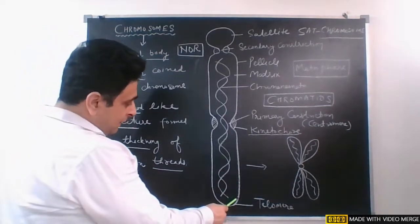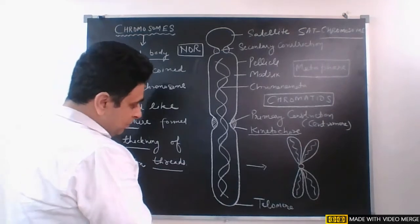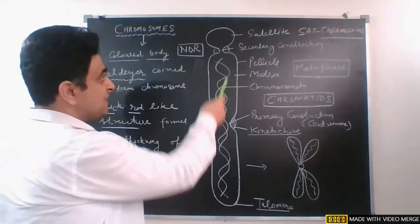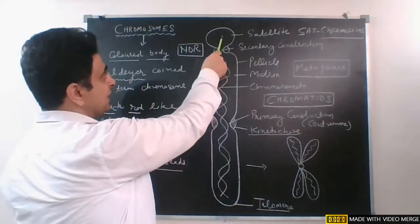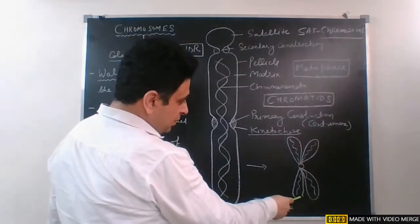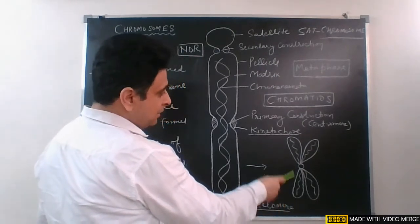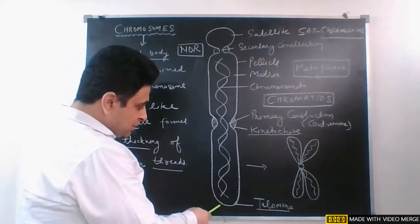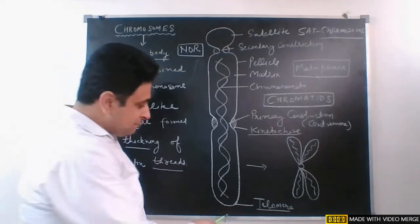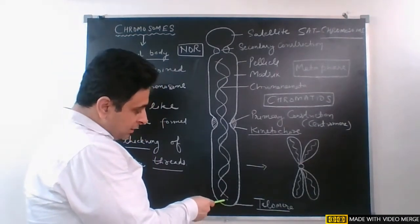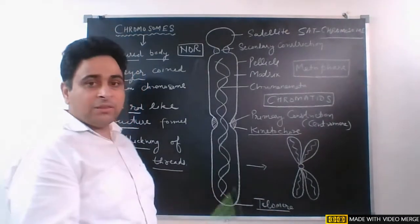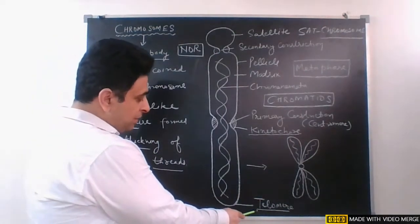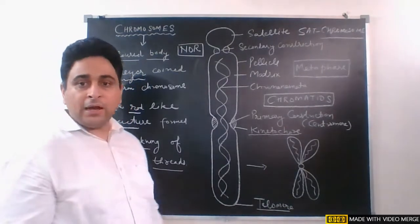At the end of each chromosome there is a boundary — this is called the telomere. Because I have drawn the diagram of SAT chromosomes, on one side the satellite part is there. But in a general chromosome, the tip at the end is called the telomere, and its function is to prevent the fusion of that chromosome with other adjacent chromosomes.